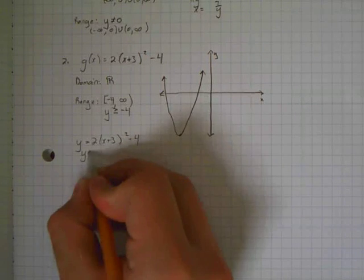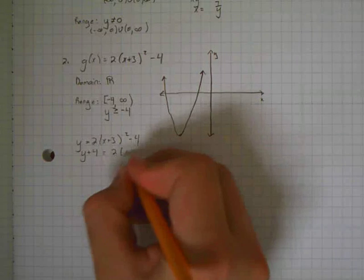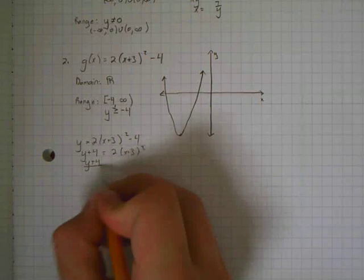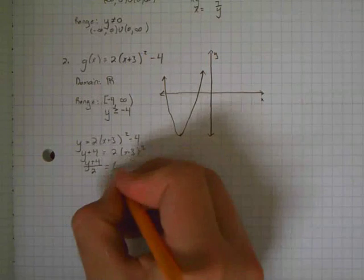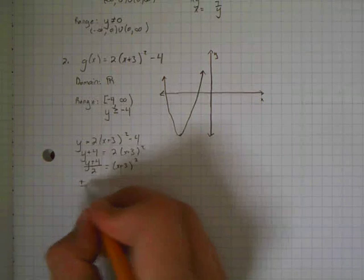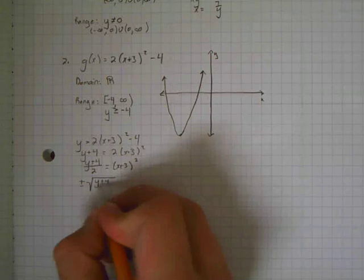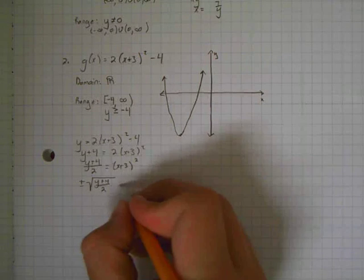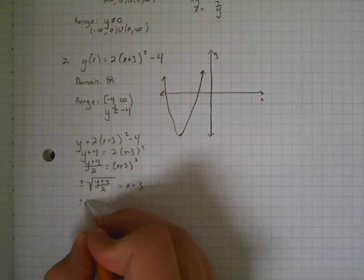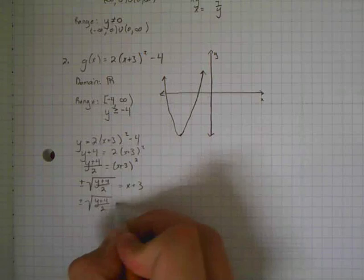So first I'll add 4. Then I'm going to divide by 2. And then I've got a square root, and we always do plus or minus when we square root.